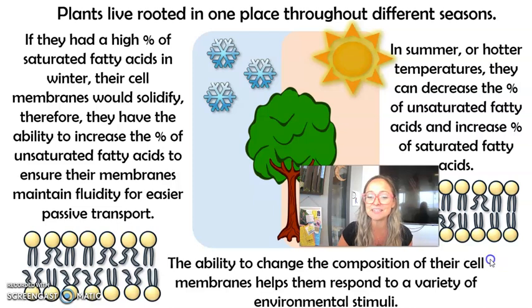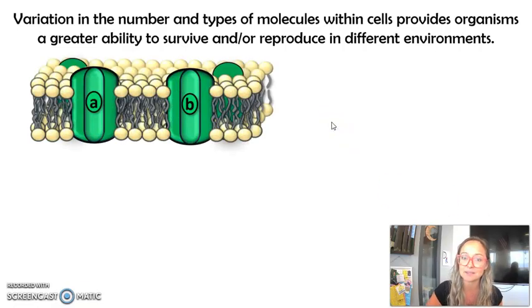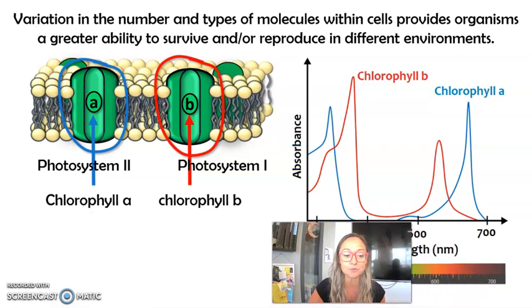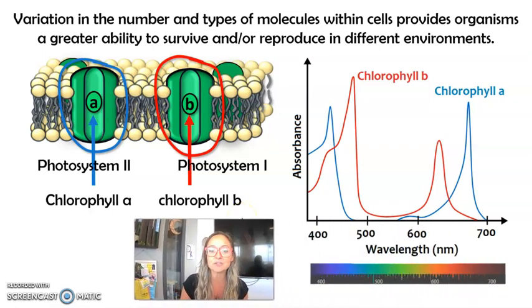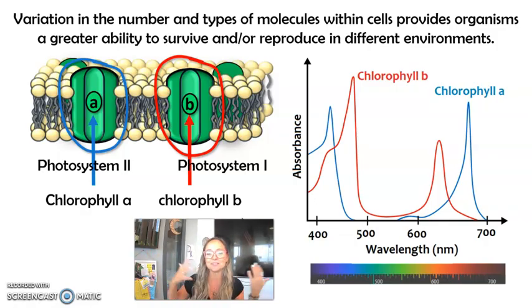The second component is that variation in number and types of molecules within cells increases their chance of surviving and reproducing in particular environments. With plants, we have our photosystems that have pigments. When we look at these photosystems and compare them to an absorption spectrum, we can see that chlorophyll B absorbs the most light at about 450 nanometers, whereas chlorophyll A works best at about 650 nanometers. So there's a variety in the wavelengths of light that each pigment can absorb, and that increases their chance of surviving and reproducing in different environments.